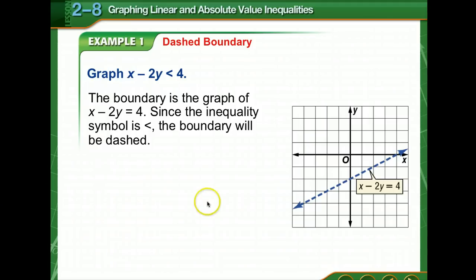It can be a dashed line like this one is, and the reason this one is dashed is because it's less than. It could also be dashed if it's just greater than. What's missing is the line underneath or equal to. That's what would make that boundary a solid line. So that's very important when you're graphing these to pay attention. Is it just less than or greater than, or does it have the or equal to sign?